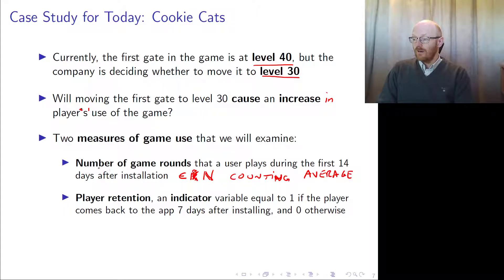This is a difference in means. What about player retention? It's an indicator equal to 1 if the player comes back to the app seven days after installing. It's either yes or no—one if the player comes back and zero if the player does not come back. This is a proportion between zero and one.